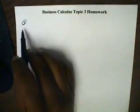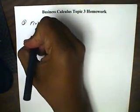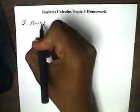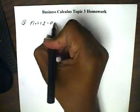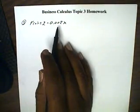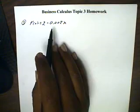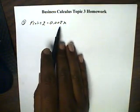This is Calculus Top 3 Homework. Looking at problem number 3, I see that the marginal profit is the derivative function, equal to 2 minus 0.002x, where x is the input of the price. And we're trying to find all the values for x for which the marginal profit is equal to 0.